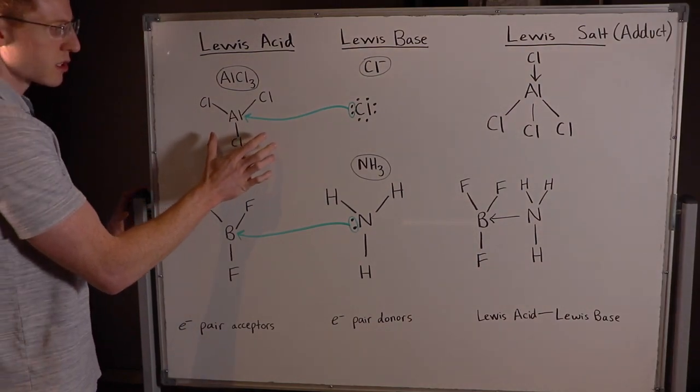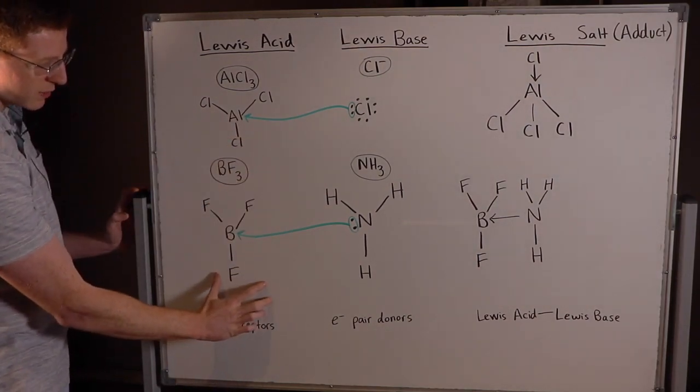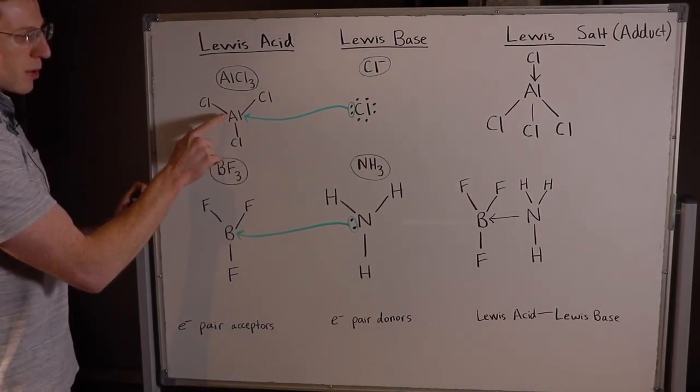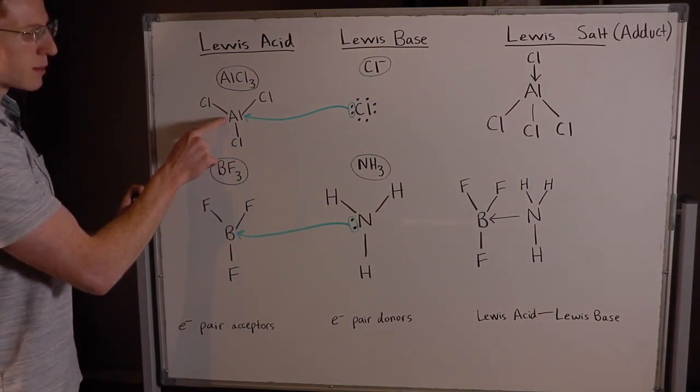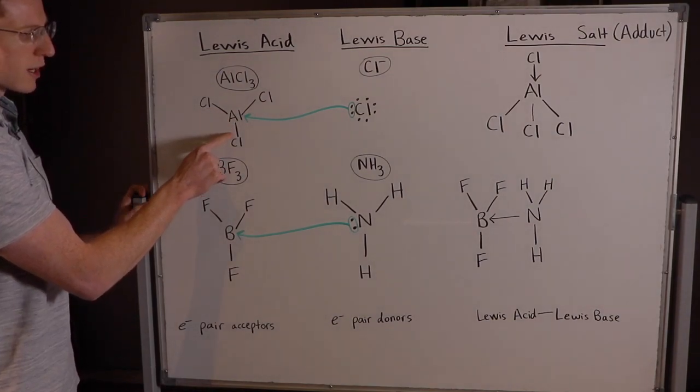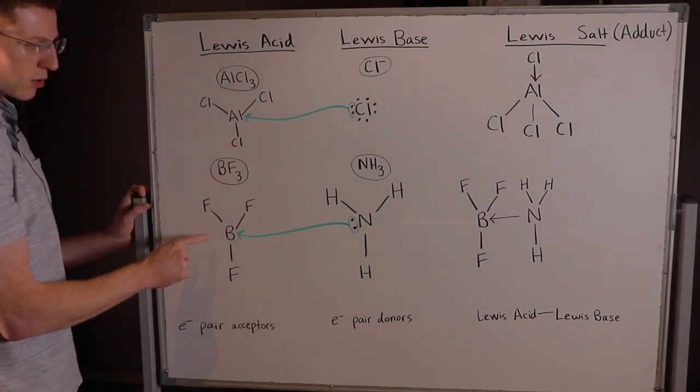The best way to see this is to draw their Lewis dot structures, and you can see I've done that here. Notice that both of the central atoms have incomplete octets. In other words, the central atom has only made three bonds, right? One, two, three, four, five, six total electrons.